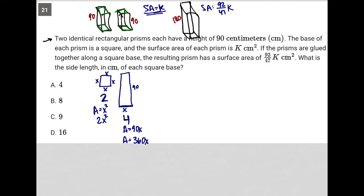So in essence k is really equal to 2x squared plus 360x. That's what it actually equals in terms of finding the areas of each side and adding them all together. So that's for the small rectangular prisms.